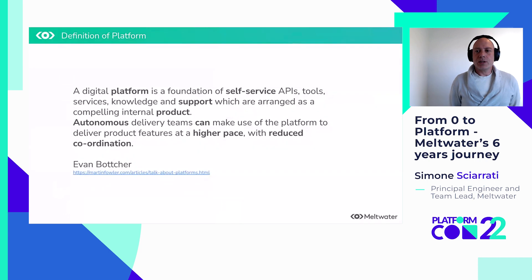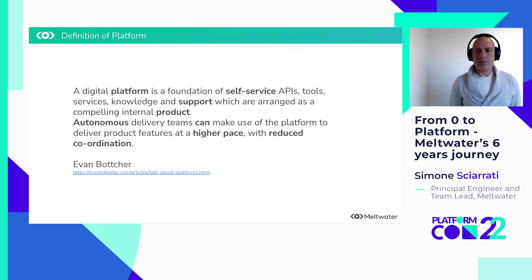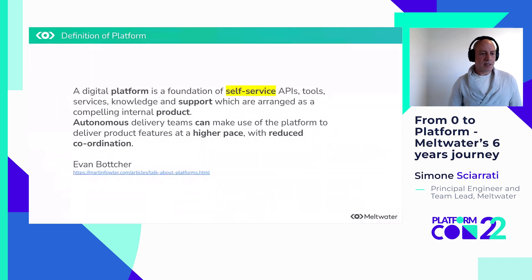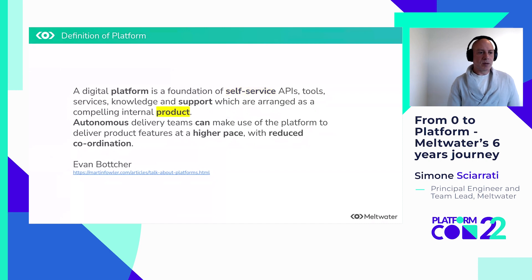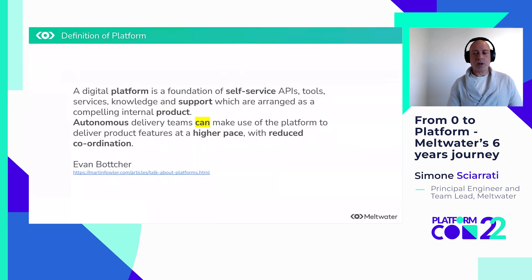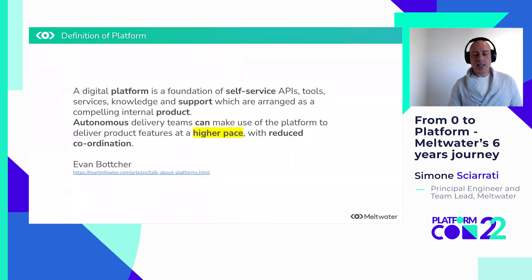In order to understand our journey, I thought we could start from what we believe is a good definition of a successful internal developer platform. I've highlighted a few key points in this definition. Self-service — teams need to be able to interact with the platform without being blocked by processes or dependencies on other teams. Product — the platform needs to be treated as a product. Teams can make use of the platform, which means it needs to be optional and it needs to increase the pace of delivery. In short, it needs to solve a real problem, otherwise teams won't be using it, and it needs to be effective and have excellent support.